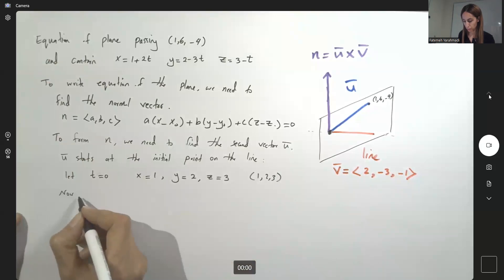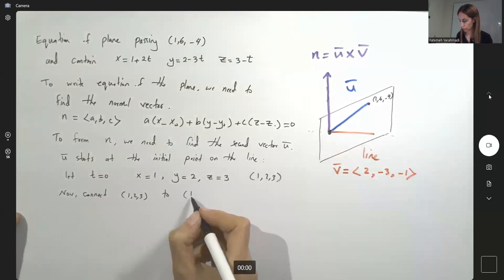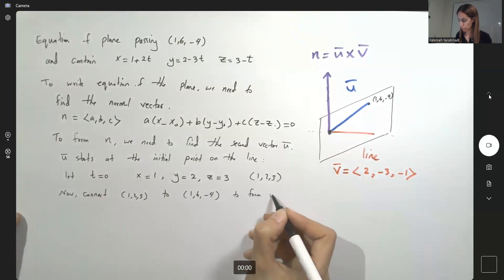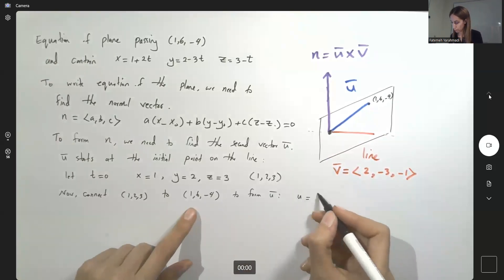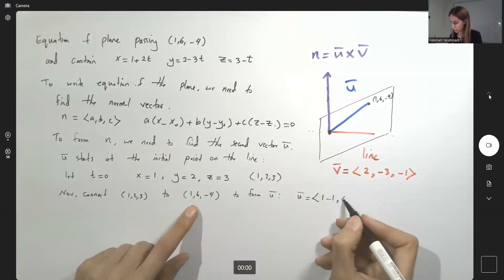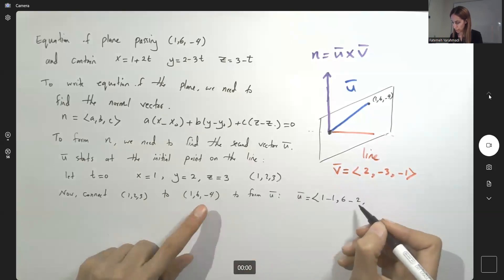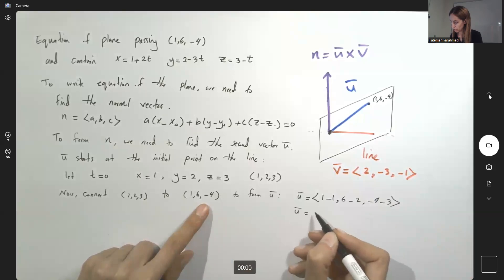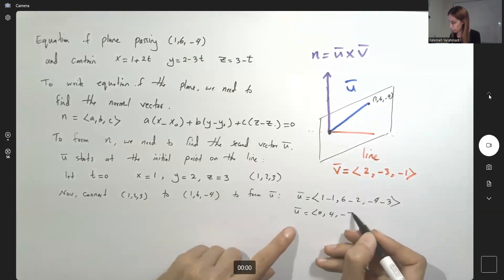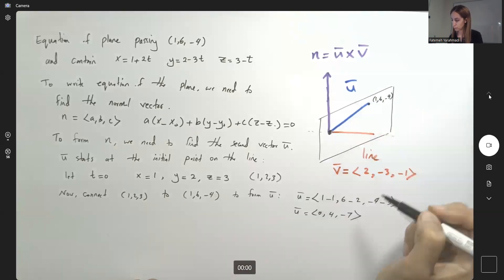Now connect 1, 2, 3 to 1, 6 negative 4 to form u. So my u is equal to 1 minus 1, 6 minus 2 and negative 4 minus 3. My u is 0, 4, negative 7. This is my u.